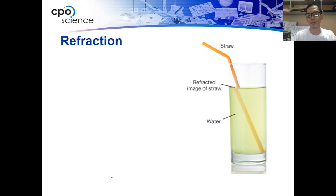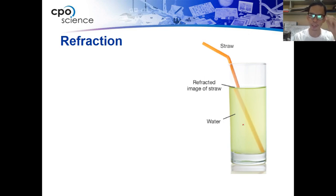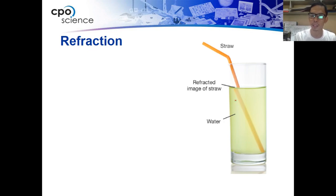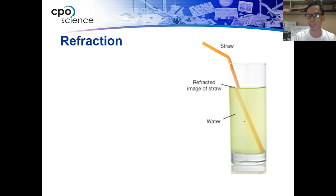As you can see in a basic school experiment, when you put a straw in water, if you look at it from the side, the straw looks like it is bent. At the bottom of the water, the straw appears bended. But actually, when you pull the straw out of the water, it is straight.